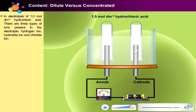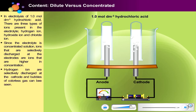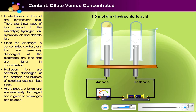In electrolysis of 1.0 mol/dm³ hydrochloric acid, there are three ions present in the electrolyte: hydrogen ion, hydroxide ion, and chloride ion. Since the electrolyte is concentrated, ions that are selectively discharged are ions that are higher in concentration. Therefore, hydrogen ions are selectively discharged at the cathode and bubbles of colorless gas can be seen. At the anode, chloride ions are selectively discharged and a greenish-yellow gas can be seen. Can you suggest a suitable gas test to determine the gas produced?